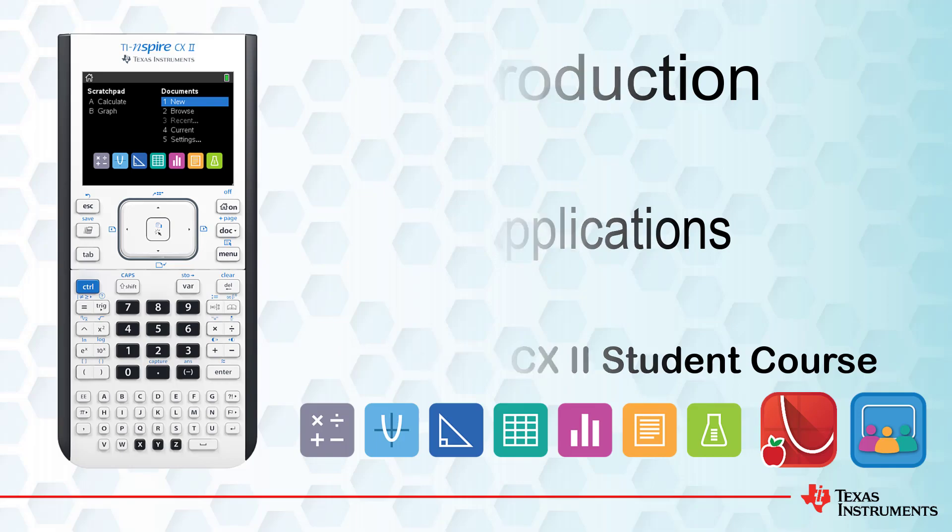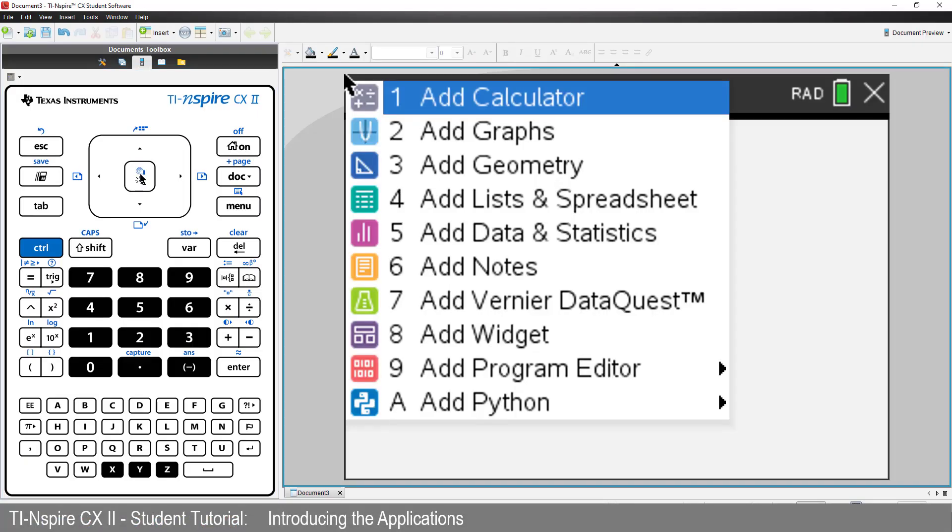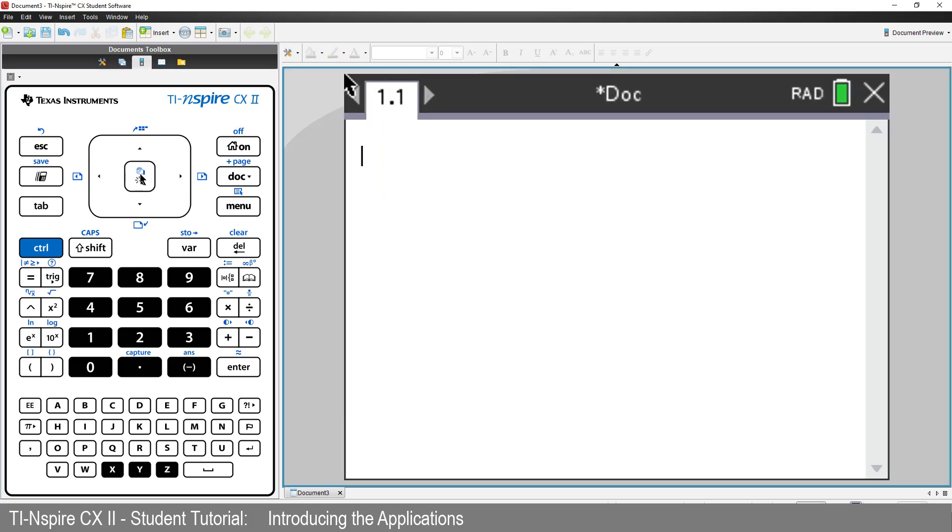We'll start by creating a new document and insert a calculator application. We'll calculate the product of the first six numbers. That's 1 times 2 times 3 times 4 times 5 times 6 and press Enter. We'll get the answer of 720.